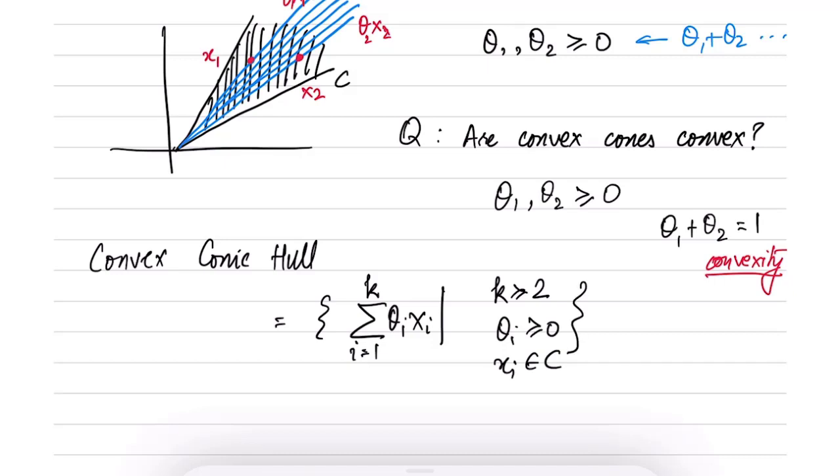So we only require the coefficients multiplying xi to be greater than or equal to 0. We don't require any other condition. We don't require them to sum up to 1 in this case. So that is the definition of the convex conic hull.